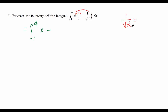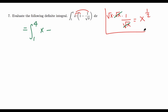Now, 1 over root x is the same as 1 over x raised to 1/2, which means x raised to negative 1/2. Also, we can think of x as root x times root x, so x times (1 over root x) gives root x on top — that's x raised to 1/2.